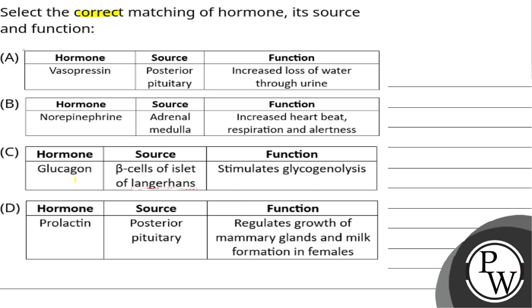Option C, hormone glucagon, source beta cells of islet of Langerhans. Function: stimulate glycogenolysis.